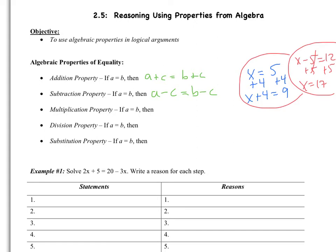Multiplication property: if A equals B, then A times C equals B times C. You can multiply the same number on both sides of the equation. C is just some constant in all of these properties, and you have to remember it's the same number on both sides. Division property: if A equals B, then A over C equals B over C. So we can divide both sides of the equation by the same number.